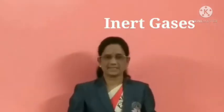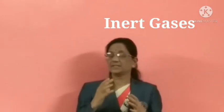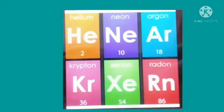The next constituent of air is inert gases. There are six inert gases: helium, neon, argon, krypton, xenon, and radon. These are present in trace amounts in the air. These gases do not react with any other substances, which is why they are called inert gases.